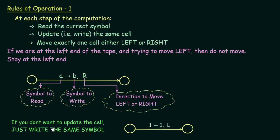There is one case where you do not want to update the cell. If your tape head is on a symbol and you are reading it but you want to leave that cell as it is, then you just write the same symbol again. For example, if your tape head is on the symbol 1 and you don't want to update the cell, you write 1 again — you have 1 here and 1 here also, because you are writing the same thing to that same cell. Then we have L, which says you have to move to the left. Those were the first set of rules of operation.